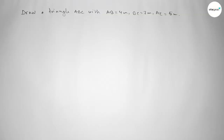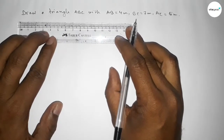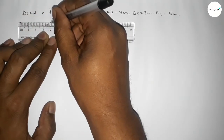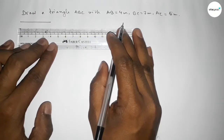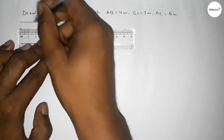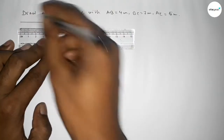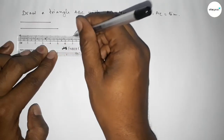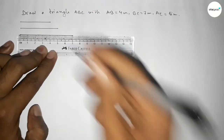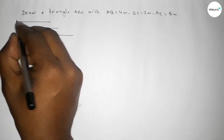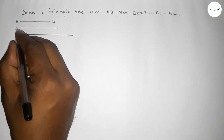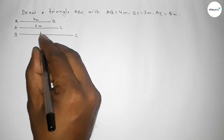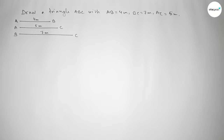First of all, we draw a line of length 4 centimeters, then a line of length 5 centimeters, and another line of length 7 centimeters. So this one is AB, this one is AC, and this one is BC — measuring 4 centimeters, 5 centimeters, and 7 centimeters respectively.